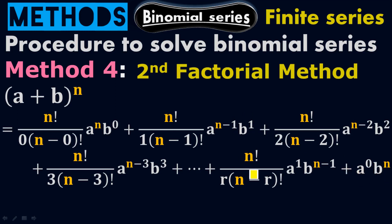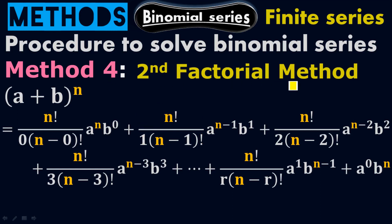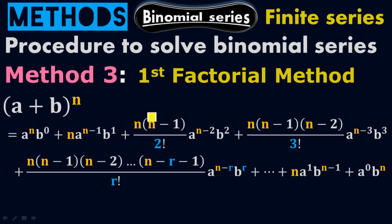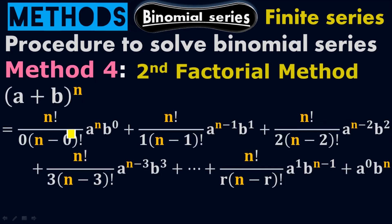Everything else is the same. The difference is only in the coefficient expression — we have a different expression for the coefficient compared to method number three. Therefore we call it the second factorial method. Whether you use this expression for the coefficient or the other expression, you will get the same value of the coefficient.